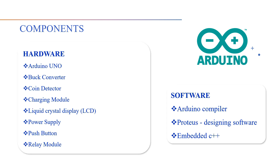This is the component list that we used in this project. In the hardware section, there are: Arduino Uno, buck converter, coin detector, charging module, liquid crystal display (LCD), power supply, push button, and relay module. In the software section, there are: Arduino compiler, Proteus for designing software, and embedded C++ programming language.